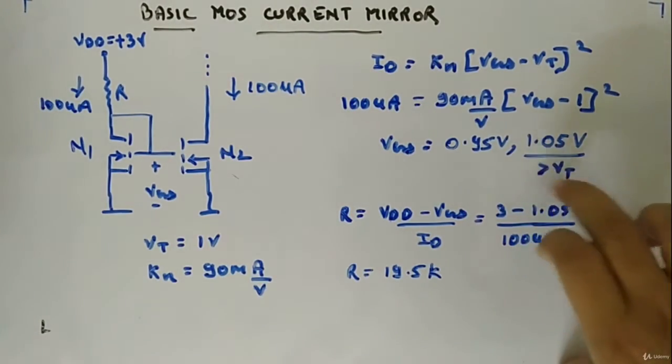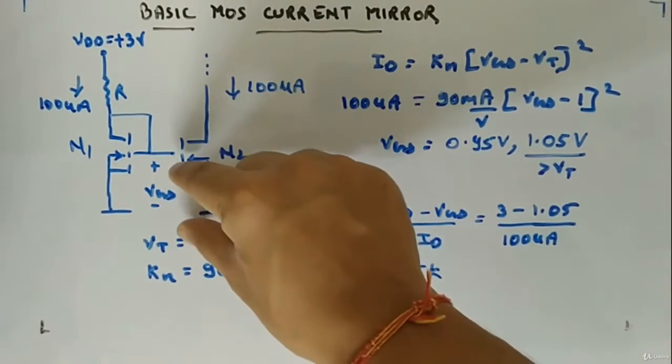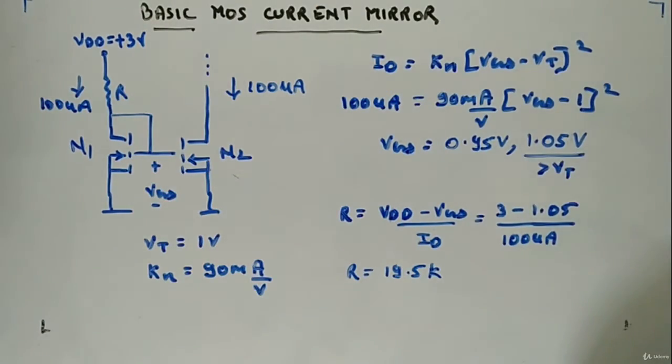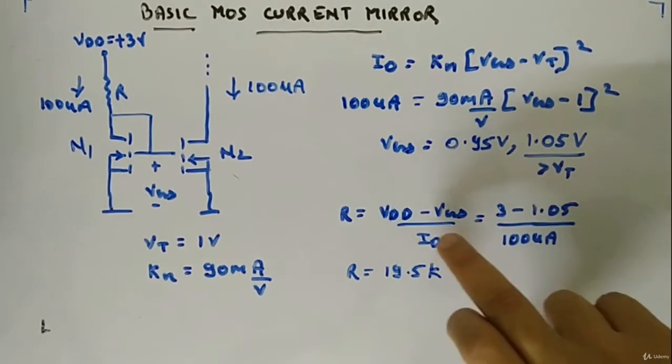That's the reason here we will be choosing 1.05 volt. Once you have the value of VGS from here, now this VGS you can apply to KVF.